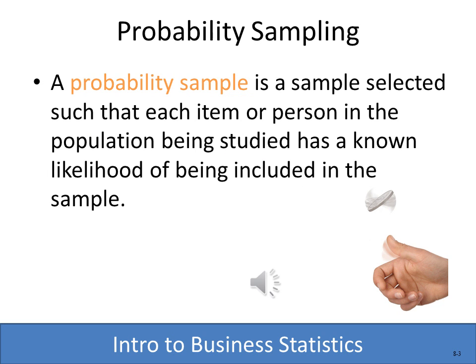The most commonly used and preferred method of sampling is called probability sampling, where every member of the population has an equal likelihood of being studied. For instance, if the population is two individuals and you flip a coin to choose which one to sample, that's an example of probability sampling. We'll discuss different methods of probability sampling as we continue.